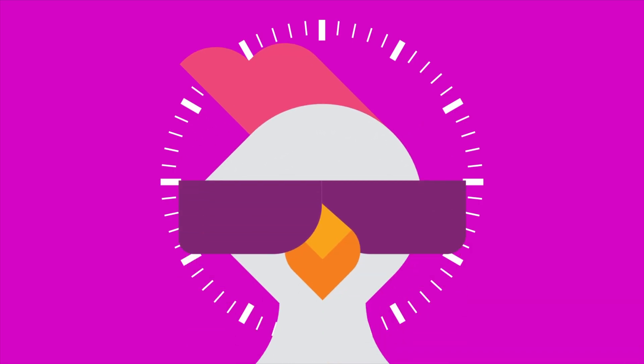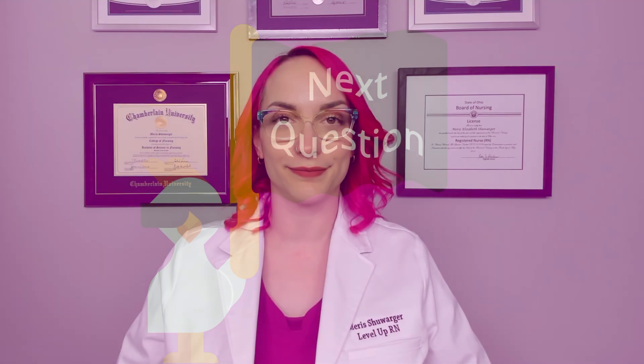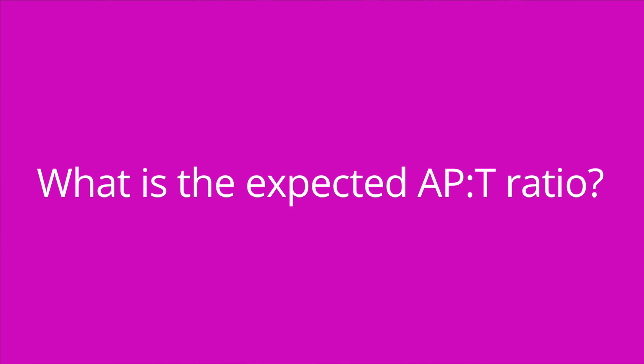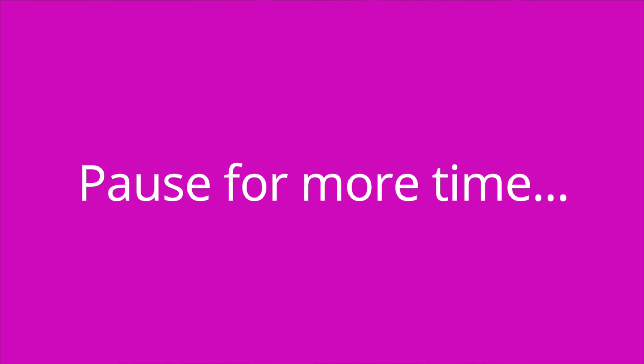That is it for the basics of assessing the anterior and posterior chest. Here are some quiz questions to test your knowledge. Where should the nurse expect to find the patient's point of maximal impulse, PMI? At the fifth intercostal space along the left midclavicular line. What is the expected AP to T ratio? One to two. What is the expected finding when assessing tactile fremitus? Vibration intensity gradually decreases as the hands are moved lower.